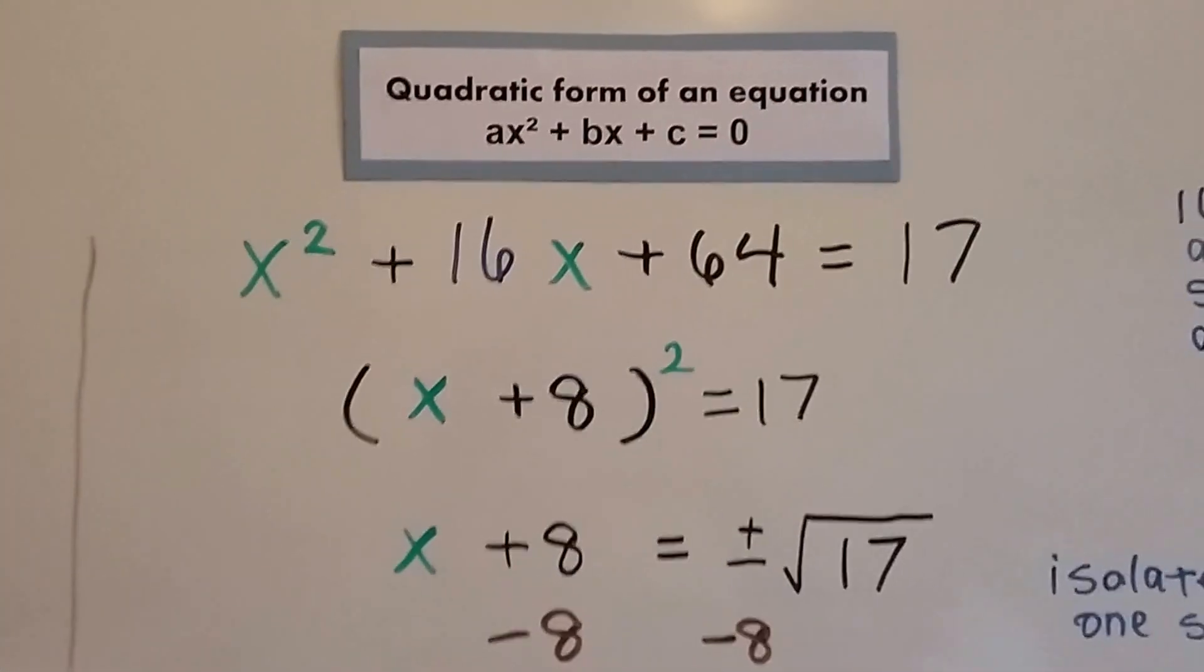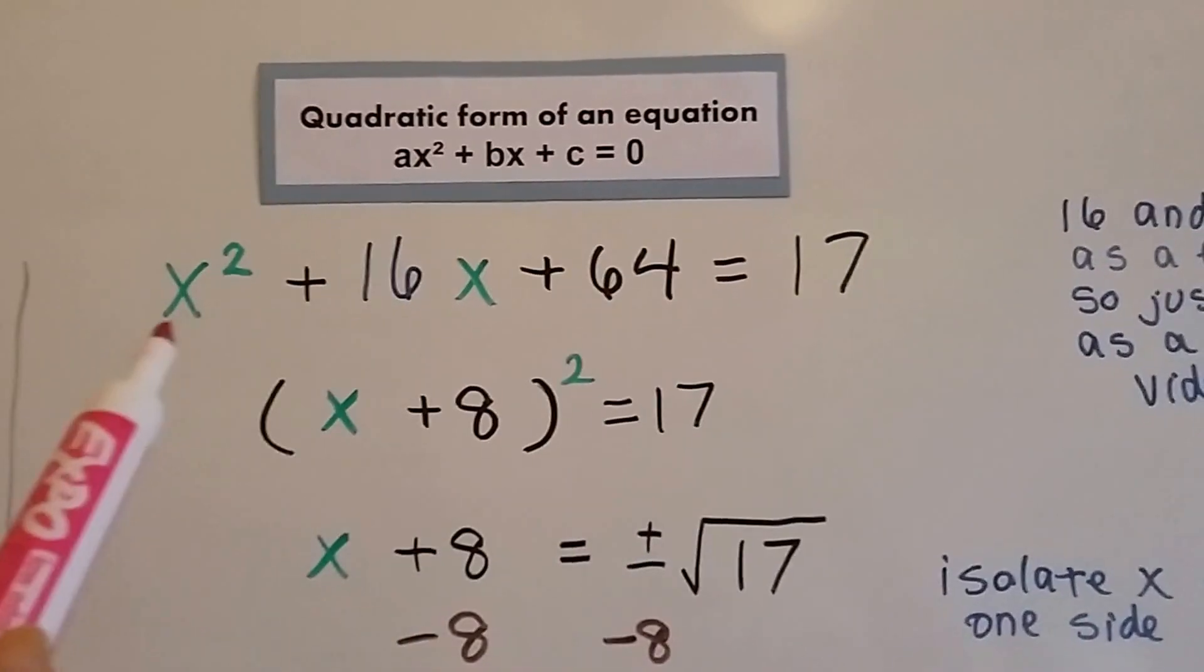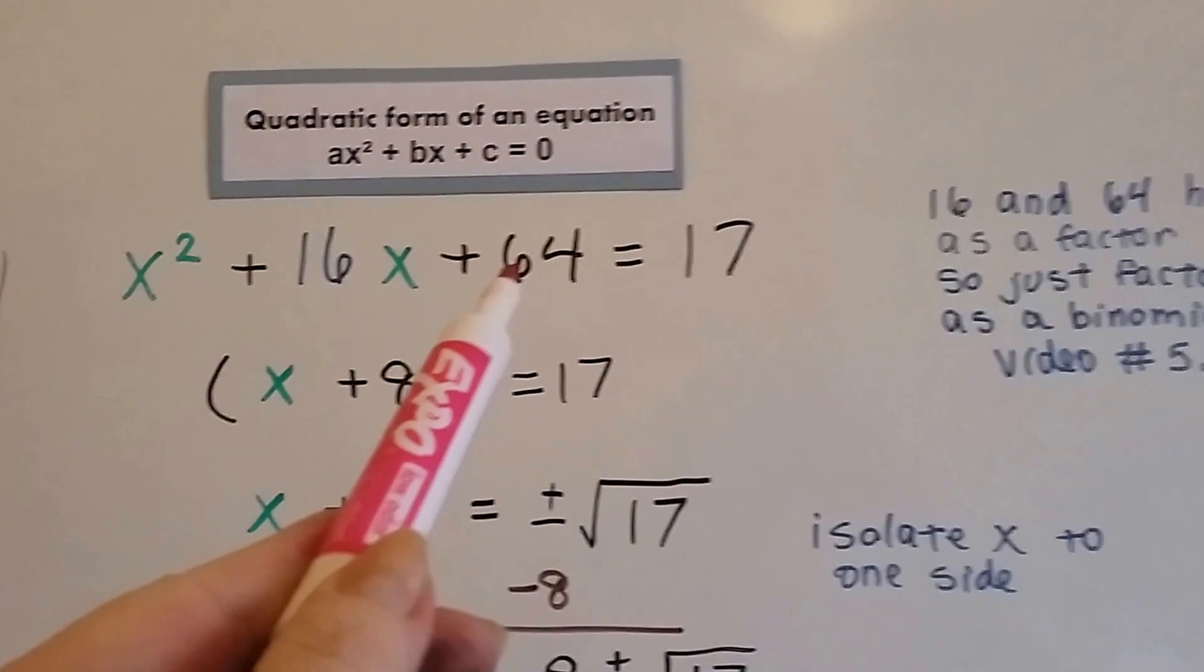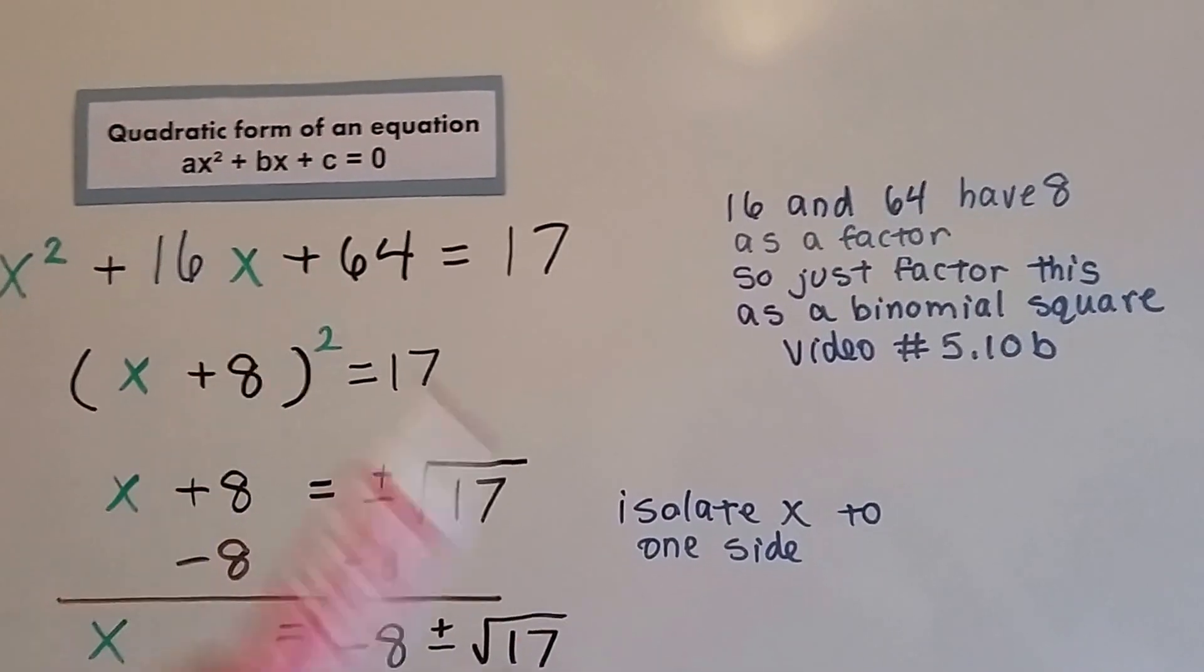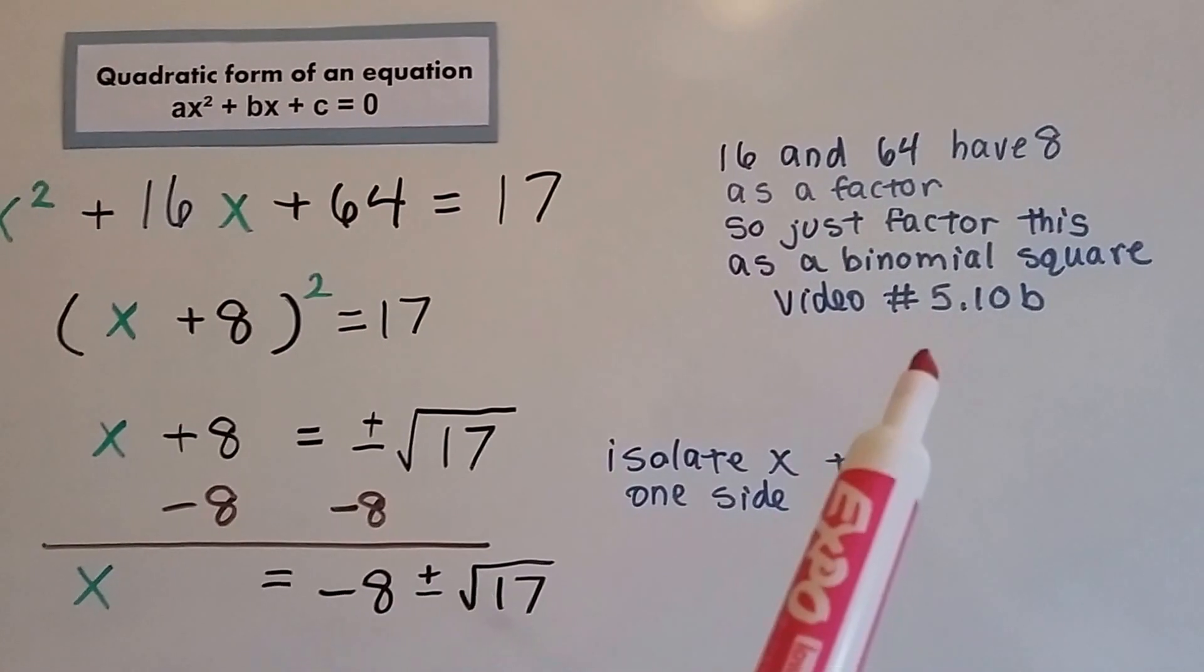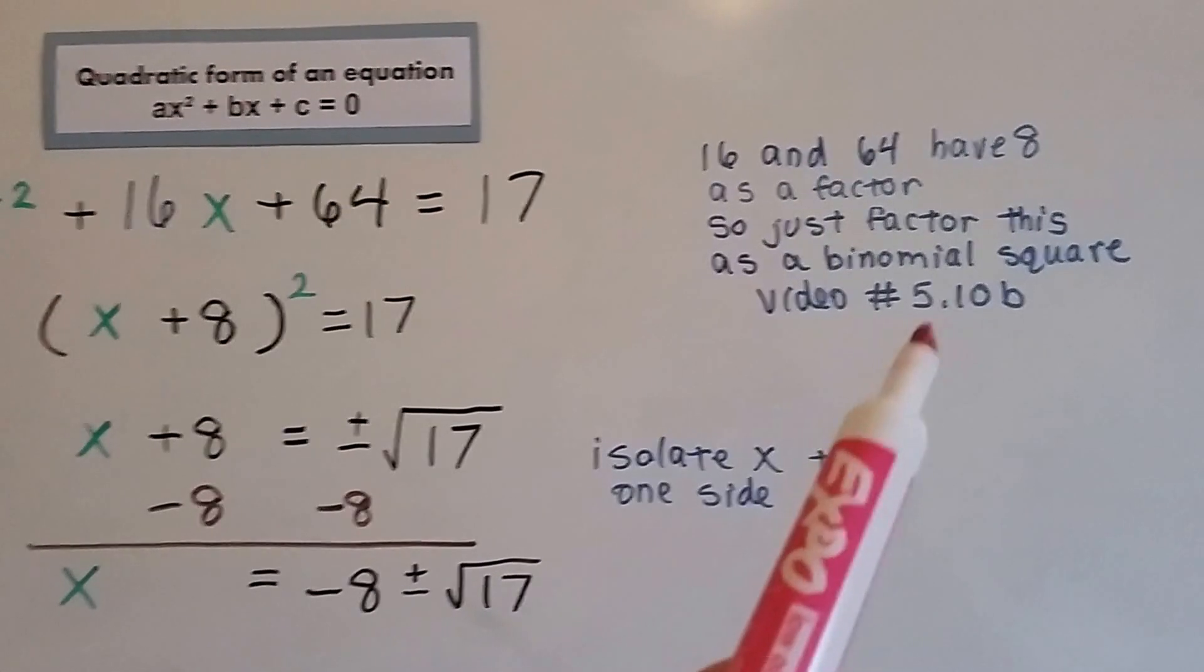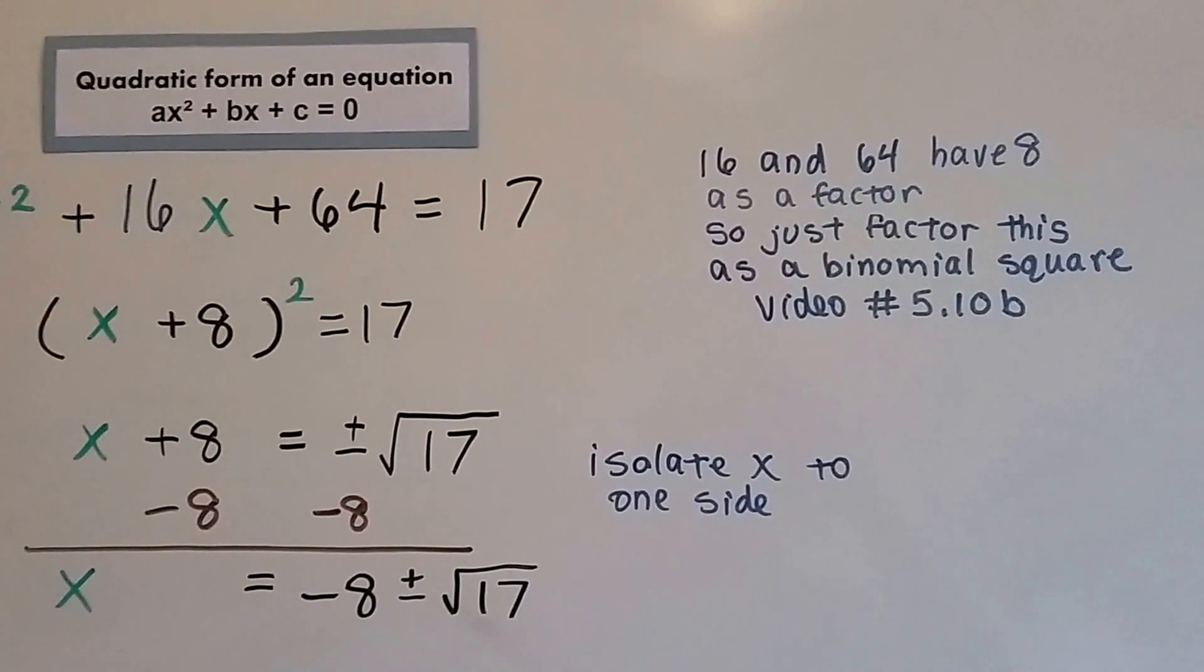Let's try this one. We have to remember what the quadratic form of an equation looks like. And this is a quadratic equation. It fits the description. And do you notice anything about the 16 and the 64? The 16 and the 64 both have 8 as a factor. So we just factor this as a binomial square. Again, that's video 5.10b. If you've forgotten, take a quick few minutes to watch the video. My videos aren't that long. And it'll refresh your memory.